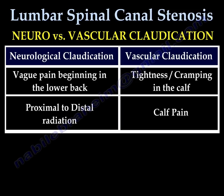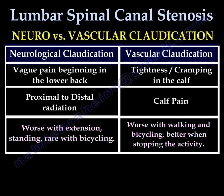Neurological claudication involves proximal to distal radiation, whereas vascular claudication presents with calf pain. Neurological claudication is worse with extension of the spine and with standing, and is very rare with bicycling. Vascular claudication is worse with walking and much better when you stop walking.